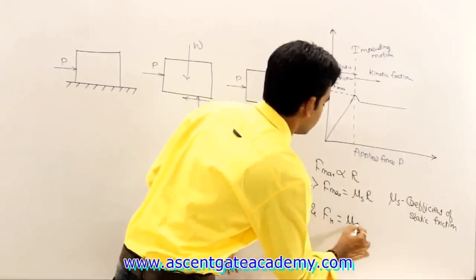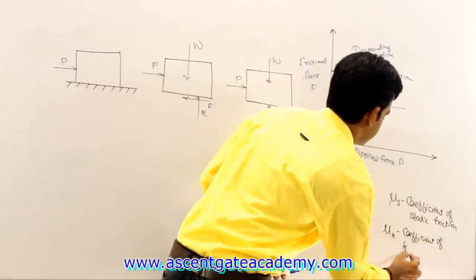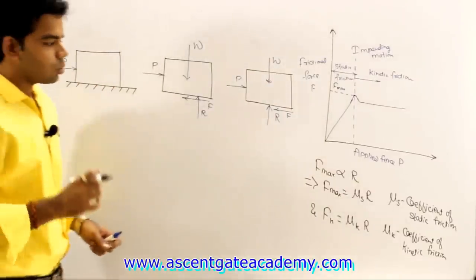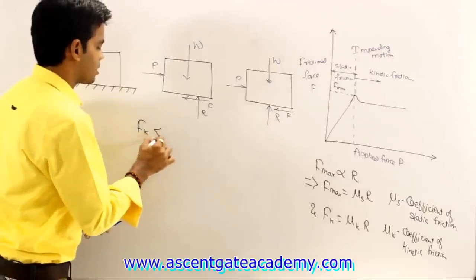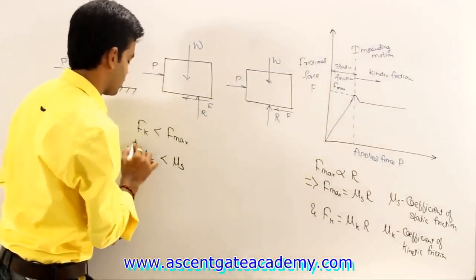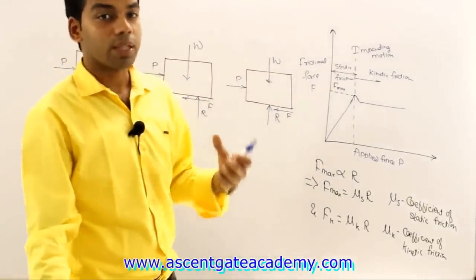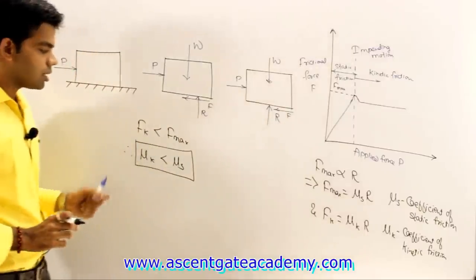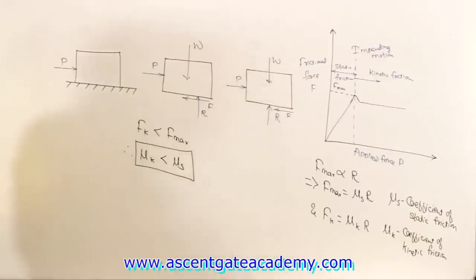F_k = μ_k × R, where μ_k is the coefficient of kinetic friction. The value of F_k is less than F_max, and therefore the coefficient of kinetic friction μ_k is less than the coefficient of static friction μ_s. More force is required to start the motion, but once motion has started the force required is less. So kinetic friction is less than maximum static friction, and μ_k < μ_s.